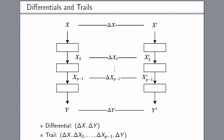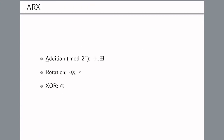It can also be that multiplying the probabilities of every round assuming they are independent is not a correct assumption, leading to errors. As shown here on the slide, a differential is delta x going to delta y, and a differential trail specifies not only the input and output difference but the intermediate differences after every round as well. We're going to focus on ARX — addition, rotation, XOR — algorithms, which involve modular addition modulo 2^n where n is the word size, typically 32 or 64 bits, along with bitwise rotation and exclusive OR.